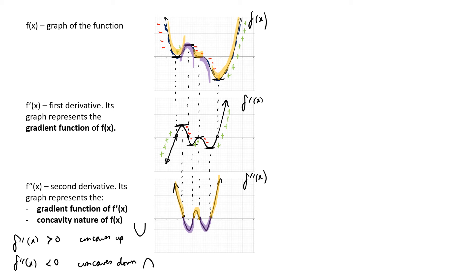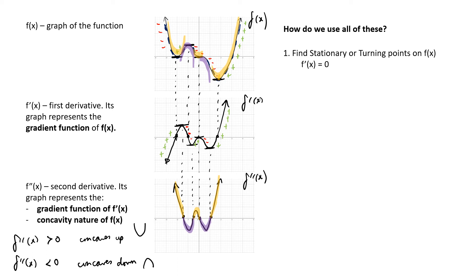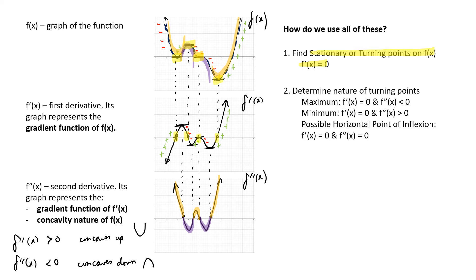So how do we use all of this? Firstly, we can use this to help us find the stationary or turning points on f of x. To find the stationary point, we're going to be looking for f dash x equal to zero. So you can see here that we've got stationary points, and all of this corresponds to when f dash x is equal to zero.